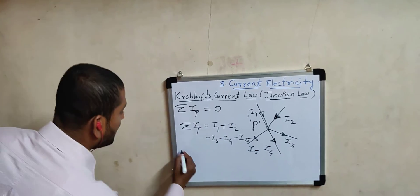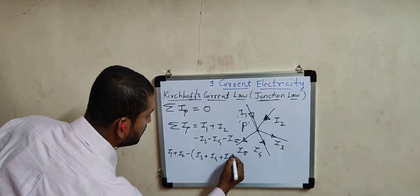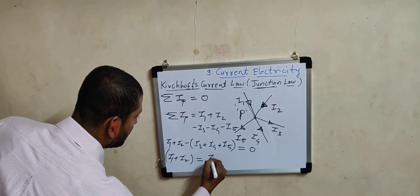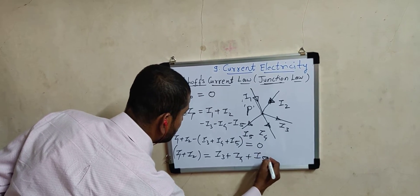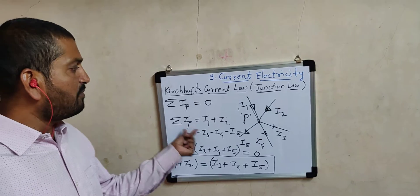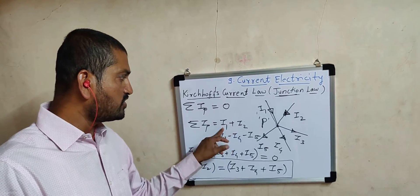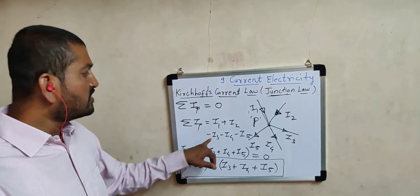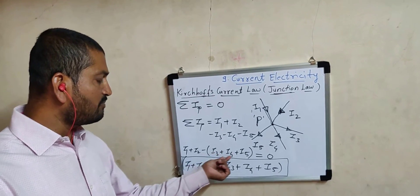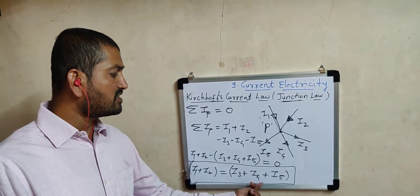Applying Kirchhoff's current law, we get I1 + I2 − (I3 + I4 + I5) = 0, which implies I1 + I2 = I3 + I4 + I5. This is the important deduction. The incoming currents I1 and I2 are taken as positive, and the outgoing currents I3, I4, and I5 are taken as negative. By rearranging, we arrive at this result.